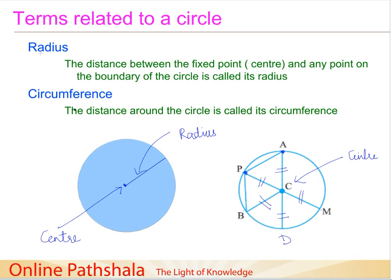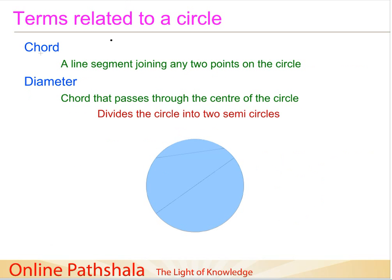The other term related to a circle is the circumference. The distance around the circle is called its circumference — it is the periphery or boundary of the circle. The boundary of the circle is the region where the circle ends and starts, and that is called the circumference of the circle.